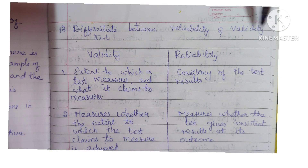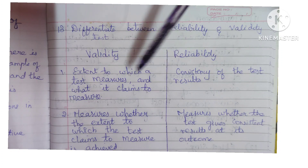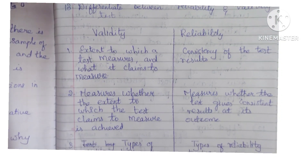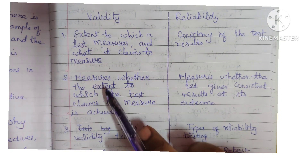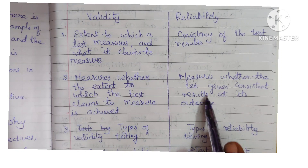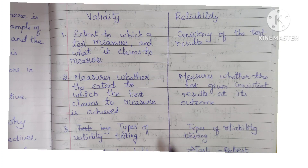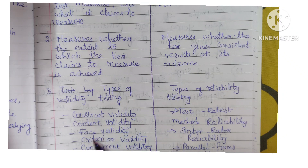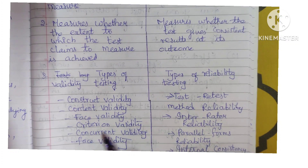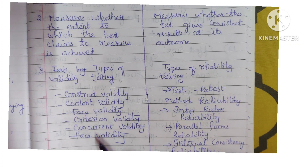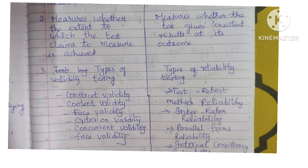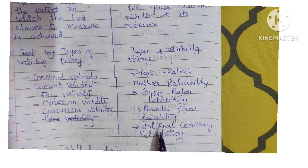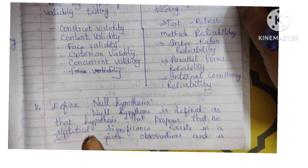Next: differentiate between reliability and validity. Validity is the extent to which a test measures what it claims to measure. Reliability is the consistency of the test results. Types of validity: construct validity, content validity, face validity, criterion validity, concurrent validity, etc. Types of reliability: test-retest method reliability, inter-rater reliability, parallel forms reliability, and internal consistency reliability.